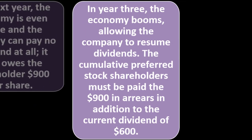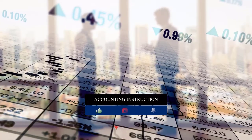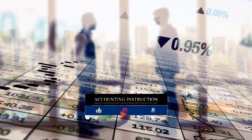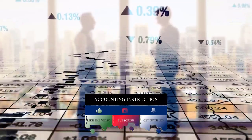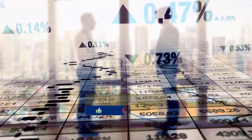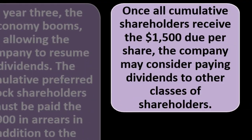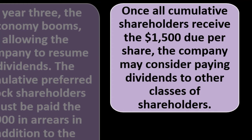In year three, the economy booms and the company can resume dividends. The cumulative preferred stock shareholders must be paid the $900 in arrears in addition to the current dividend of $600. The company cannot pay common stockholders — who they're trying to keep happy through voting — until they first pay all dividends owed to preferred stockholders, including arrears. Once all cumulative shareholders receive the $1,500 due per share, the company may consider paying dividends to other classes of shareholders.